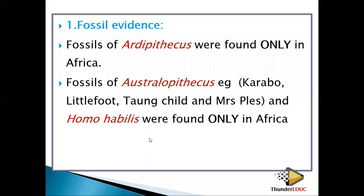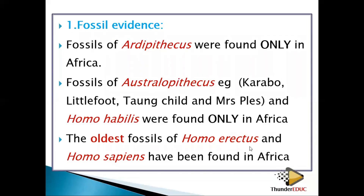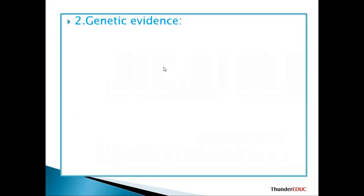All the oldest fossils were found in Africa, which shows that modern humans originated from Africa and then went to the rest of the world. The oldest fossil of Homo erectus was discovered in Africa — although some Homo erectus fossils were found elsewhere, the oldest is African. Because Homo erectus could walk on two limbs, it migrated to the rest of the world. Homo sapiens fossils have also been found in Africa, with the oldest still in Africa.